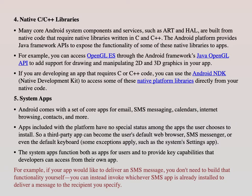The next layer is Native C or C++ libraries. Many core Android system components and services, such as ART and HAL, are built from native code requiring libraries written in C and C++. The Android platform provides Java framework APIs to expose the functionality of these native libraries to applications. For example, you can access OpenGL — used for graphics and animation — through the Android framework's Java OpenGL API. If your app requires C or C++ code, you can use the Android NDK (Native Development Kit) to access native platform libraries directly.